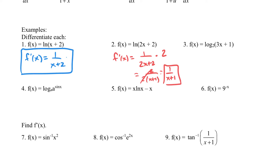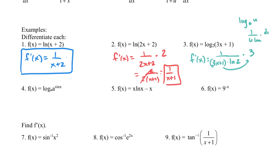Moving on: f(x) = log base 2 of (3x + 1). Recalling the formula for log base a of u — that's 1 over u·ln(a) times du/dx — we get f′(x) equals 1 over (3x + 1)·ln(2) times 3, the derivative of (3x + 1). Cleaning that up gives 3 over (3x + 1)·ln(2), and I'll leave it like that.